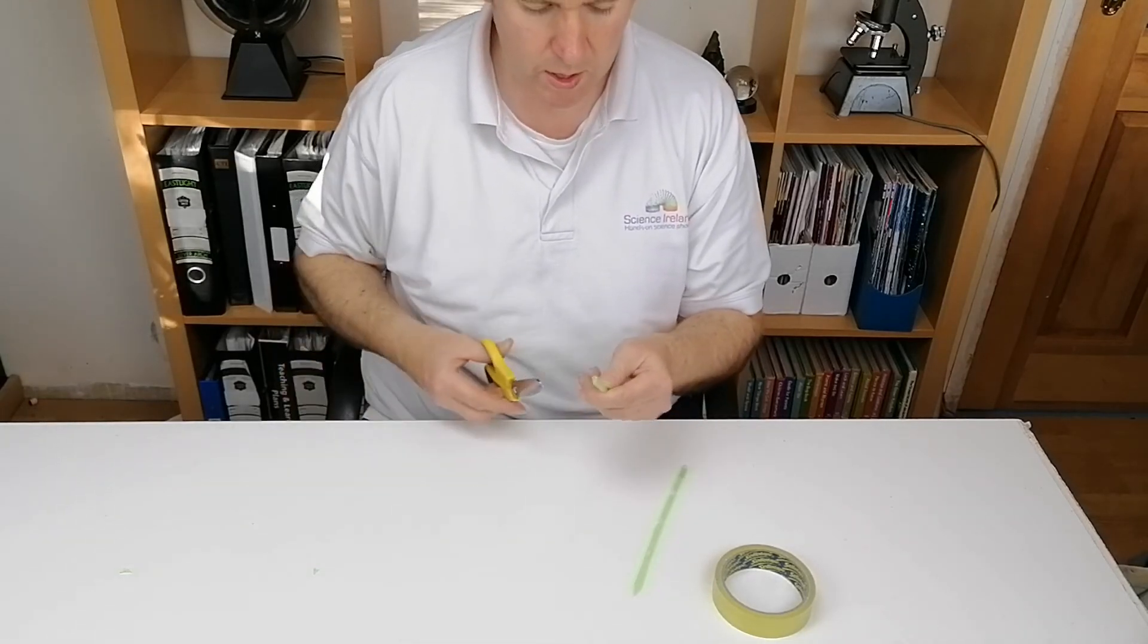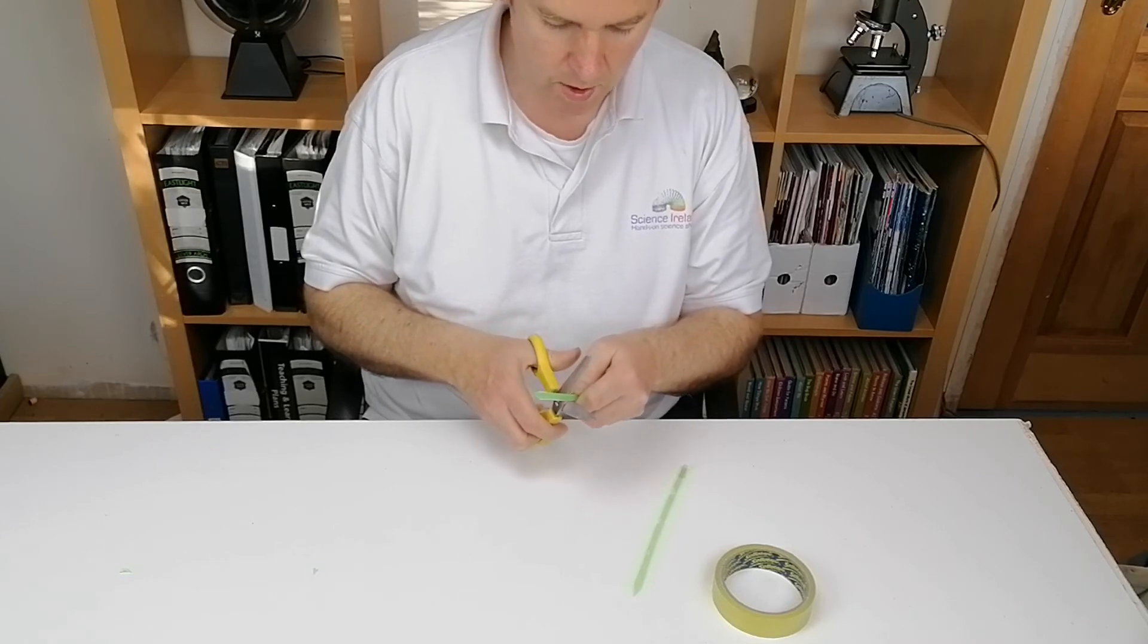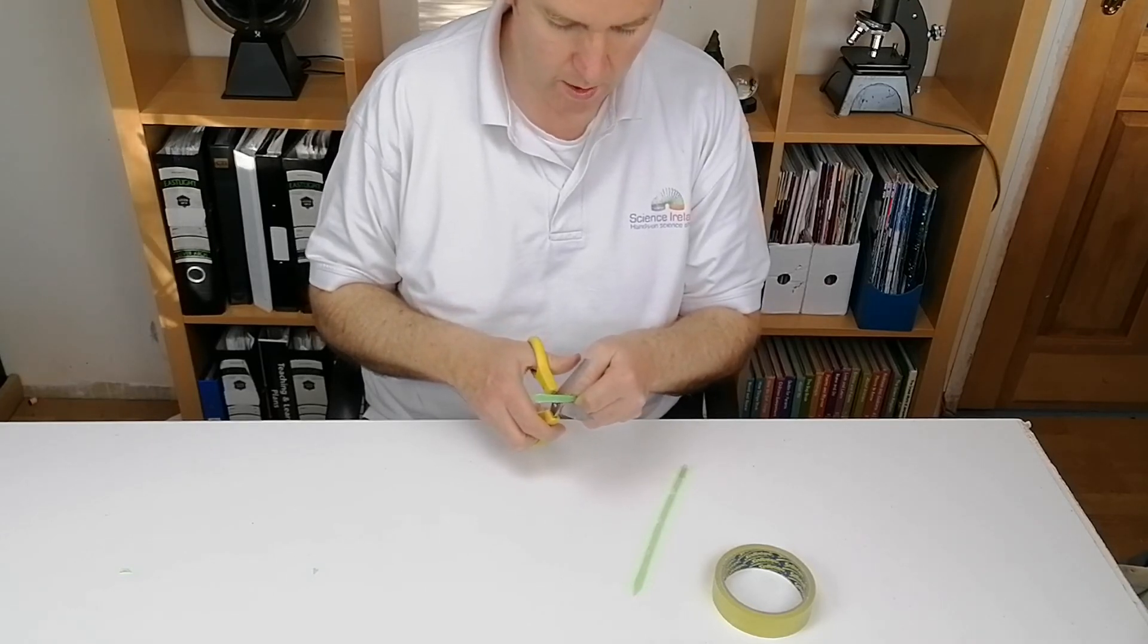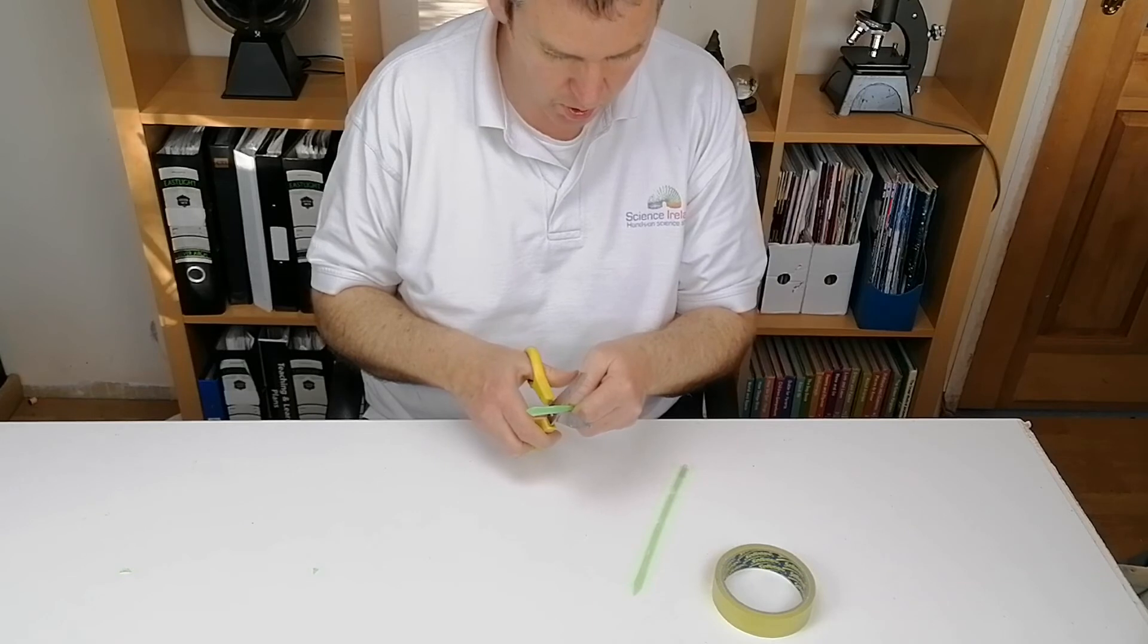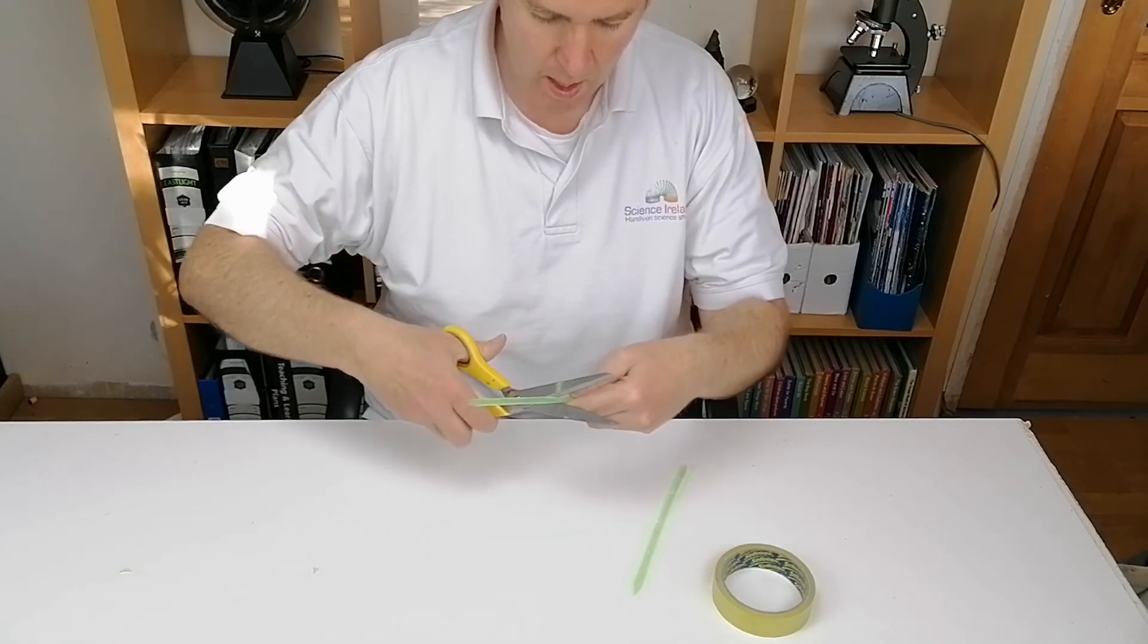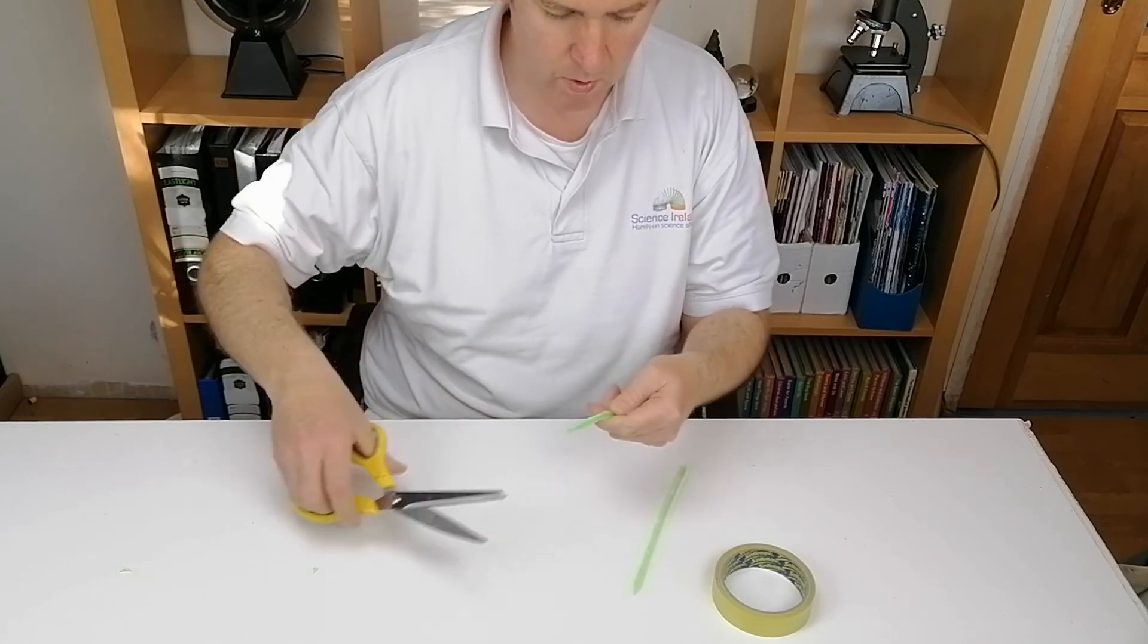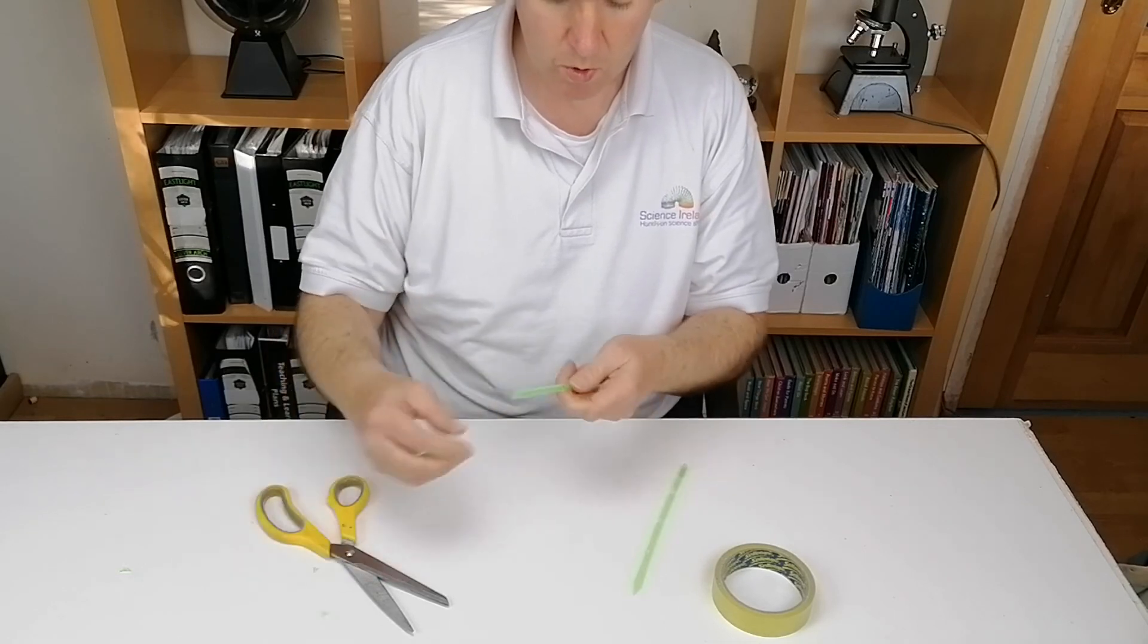Now what you're going to do is wherever you want to make the hole you cut halfway through the straw at an angle and then you do the same halfway through the straw so that it makes a diamond shape. Once it makes a diamond shape you pull that out, you've made one hole so you can put your finger over it.